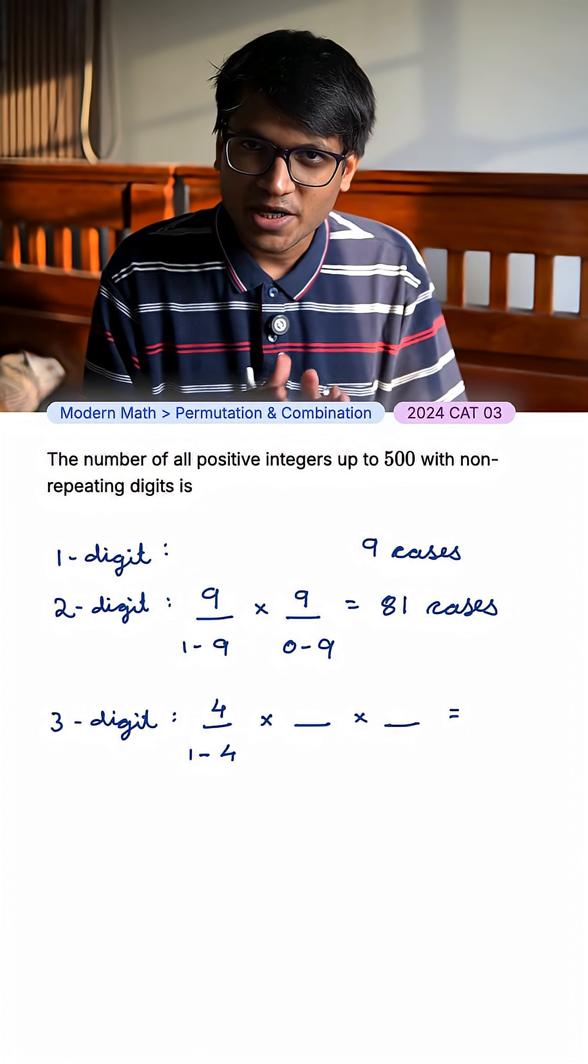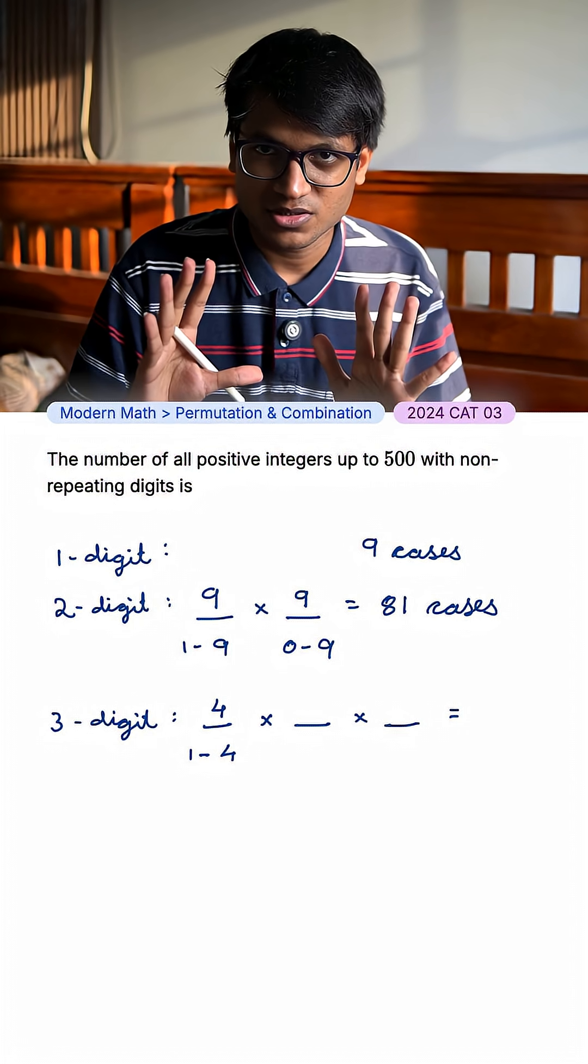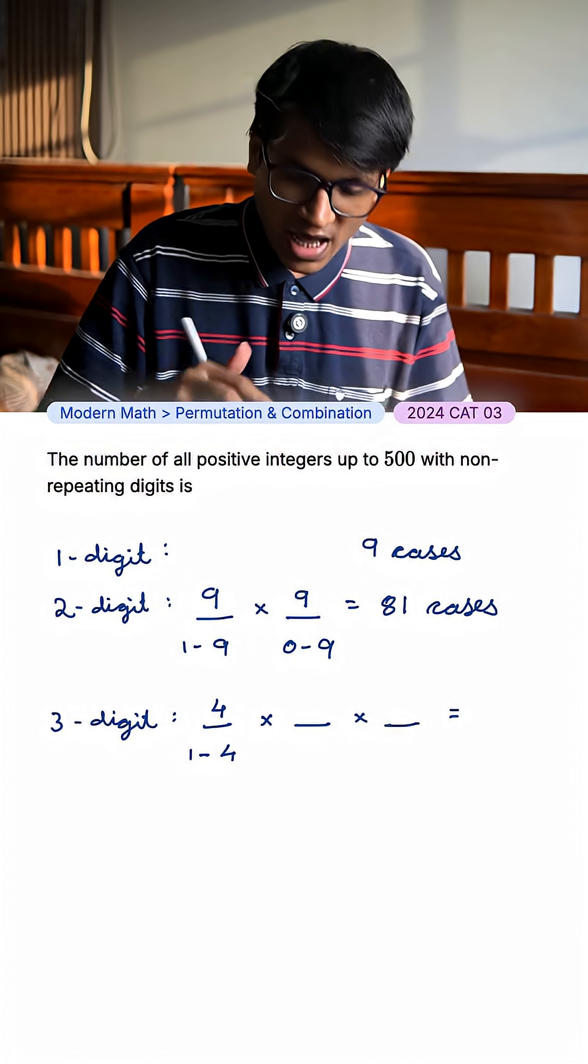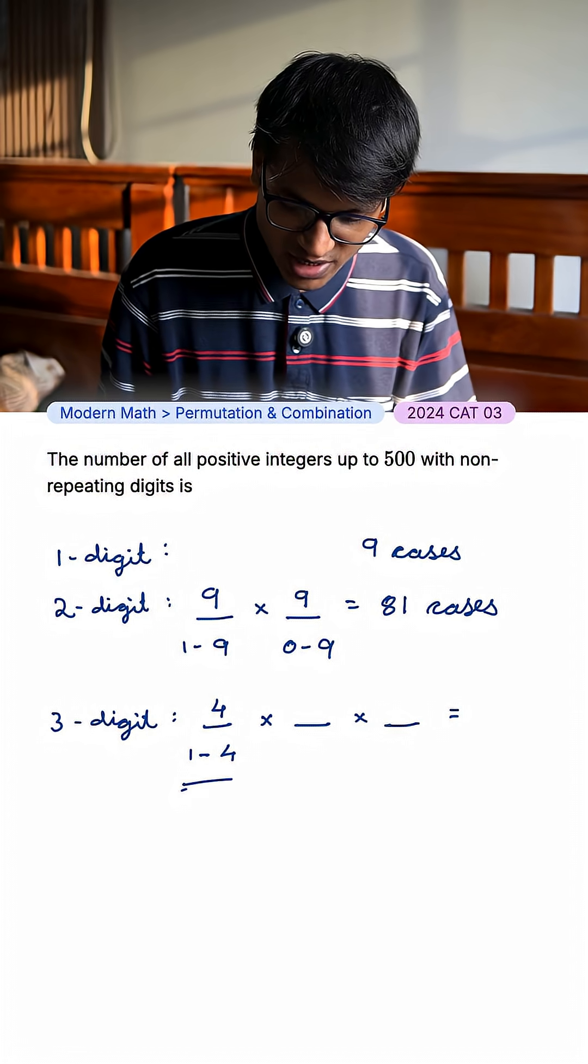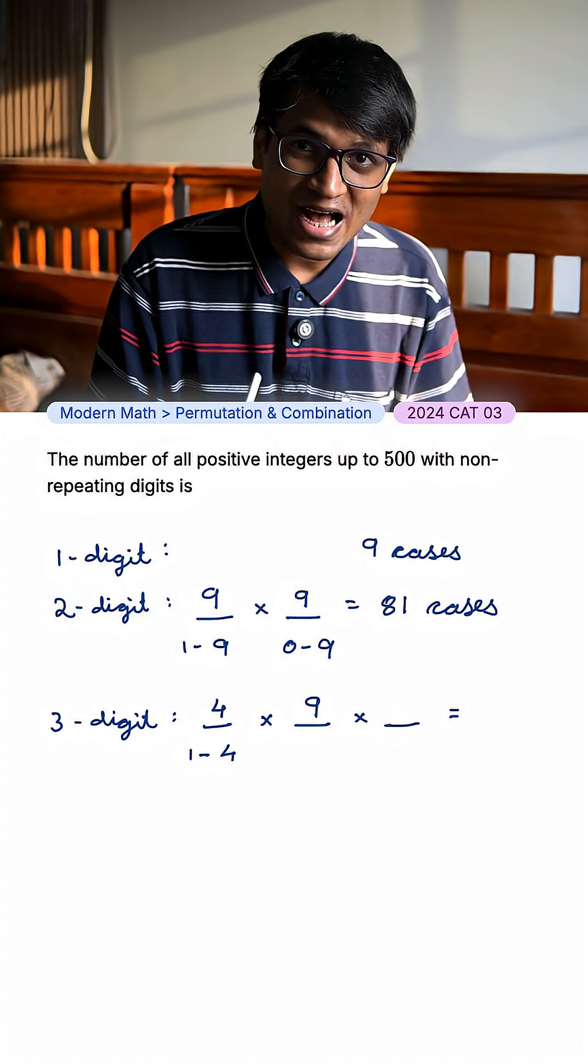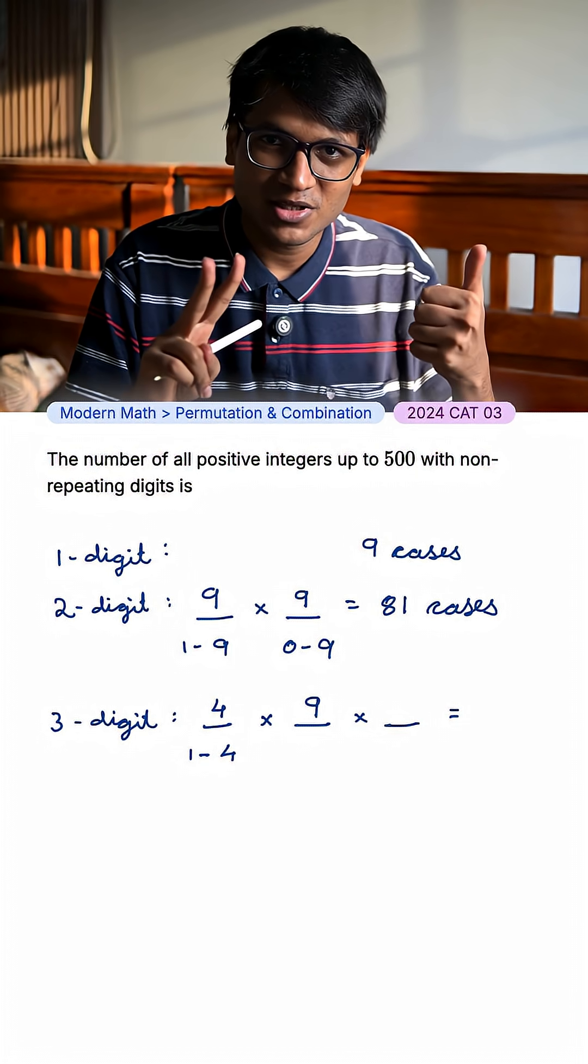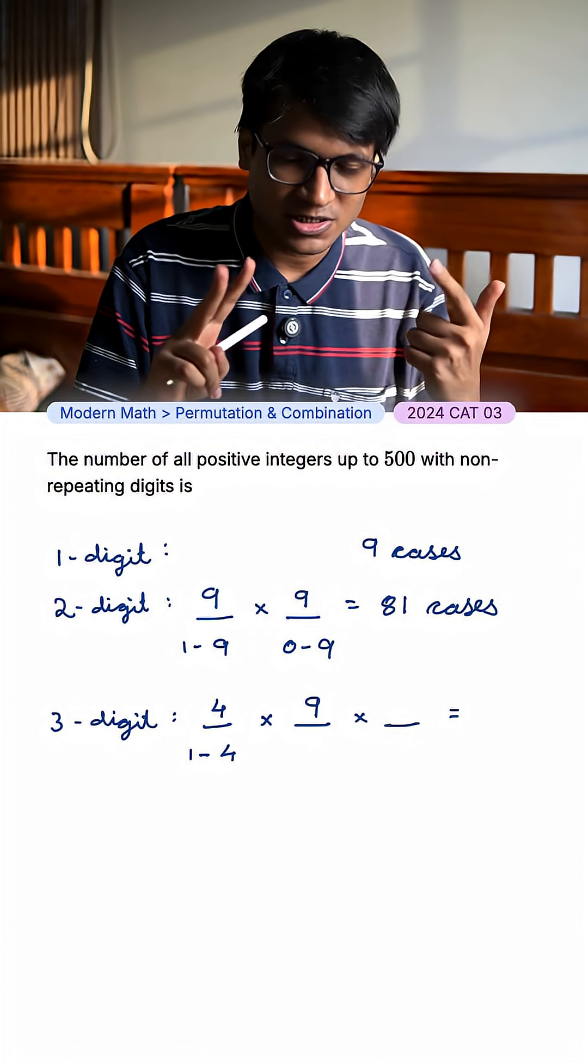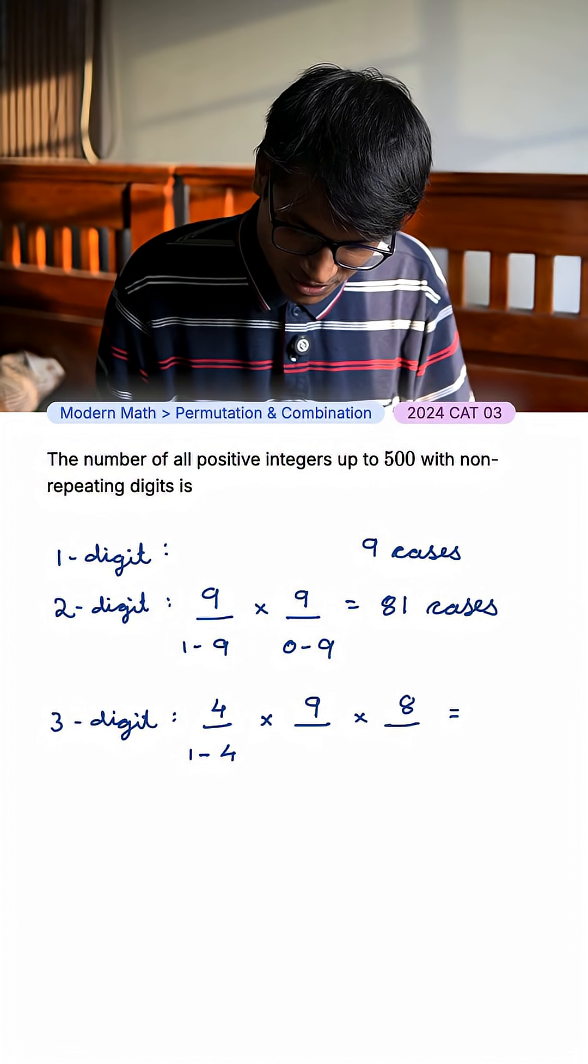In the tens place, I can put 0 to 9. I have 10 options. But I'll be using one of the numbers in the hundreds place. In the units place, I have again 10 options. But I'll have to subtract 2. 1 is the number in the hundreds place. 1 is the number in the tens place. So 4 into 9 into 8,